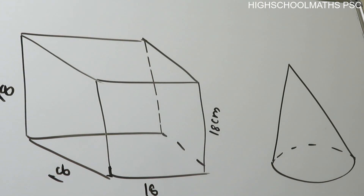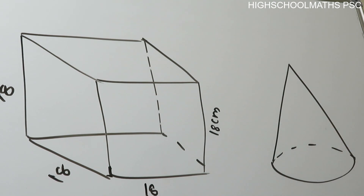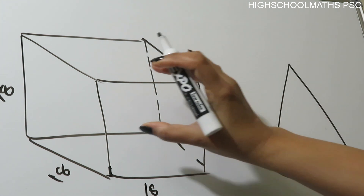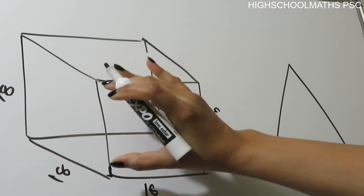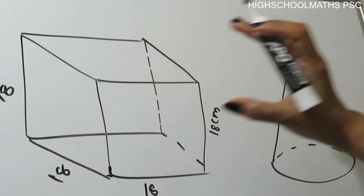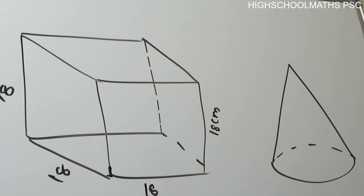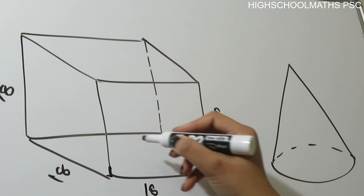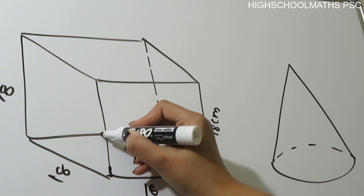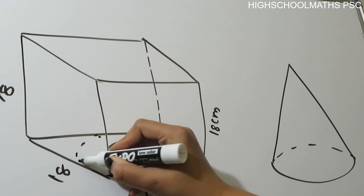We are going to add a cone — like an ice cream cone shape. It has a triangular profile, and the base is a circle. The base of the cone is 18 cm, matching the cube's edge of 18 cm.